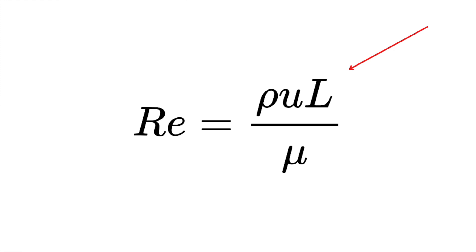The bottom of the fraction deals with the viscosity of the fluid — like how thick the fluid is — just think of water versus honey. So this number is fantastic, but how do we know whether we'll get a laminar or turbulent flow?